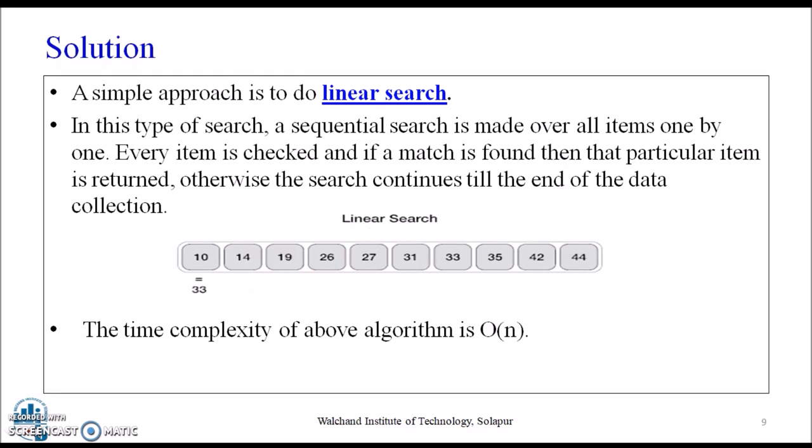Otherwise it continues till the end of the data. If the match doesn't occur, no element is returned, minus one is returned. Here you can see the item to be searched is 33, and linear search keeps on comparing with every one, one by one, and when it is found it returns.